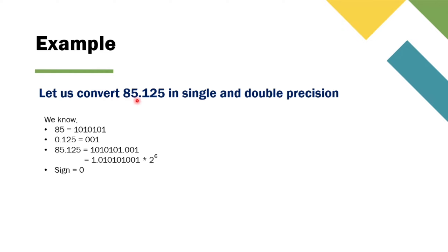Let's convert 85.125 in single and double precision. The binary conversion of 85 is 1010101 and that of 0.125 is 0.001. Therefore, the binary conversion of 85.125 is 1010101.001. Converting to normalized form: 1.010101001 × 2^6. Therefore its sign value is 0.